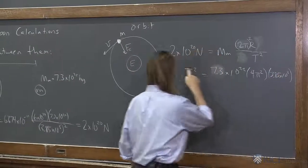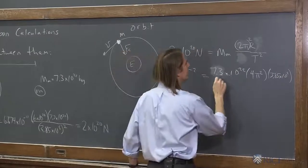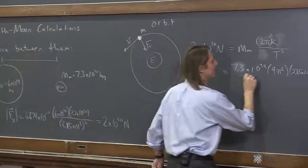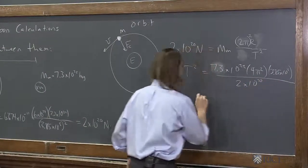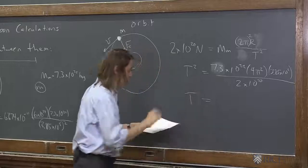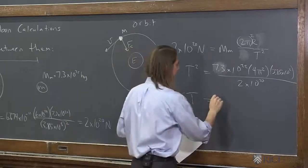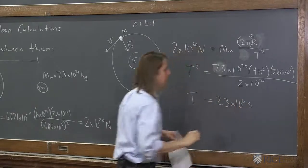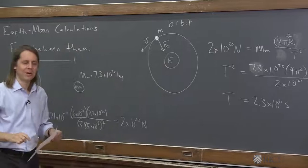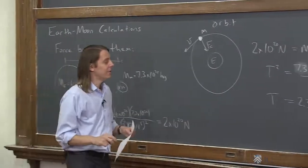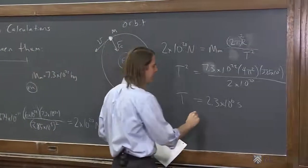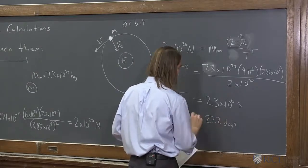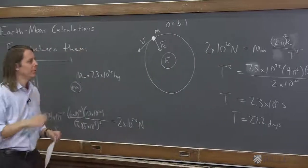This is getting a little unnecessary because we already used all these numbers here. Over nothing. There's nothing left. Oh, over the force, 2 times 10 to the 20. Anyway, if you do that and take the square root, you get that t is 2.3 times 10 to the 6 seconds. I don't really think of my life in seconds. I think of it in hours and days. If you divide that by 3,600 to get it to hours, and you divide it by 24 to get to days, you get 27.2 days, which is about right for the orbital period of the Moon.